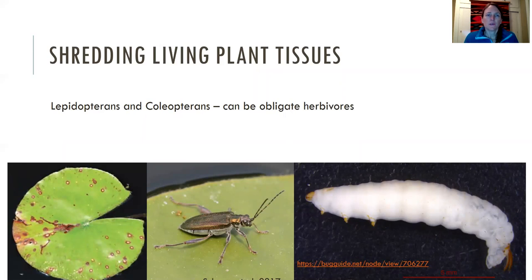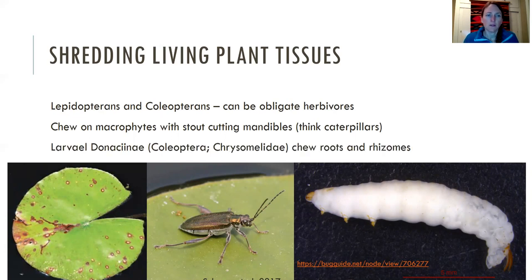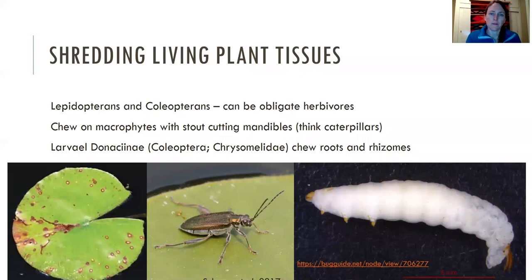There are a few organisms that shred living plant tissues. Some of them are lepidopterans — caterpillars and beetle larvae — and they can be obligate herbivores. Think of a caterpillar that chews up plants on land; they also do that underwater. There's a larval Donaciinae, which is a beetle larva that chews on roots and rhizomes. You can see the effect on the lily pad — this is called the water lily beetle. The adult makes spots on the lily pad, and then the larva goes down and chews on the roots and rhizomes.